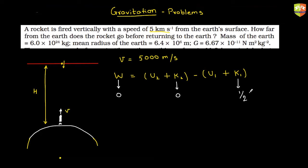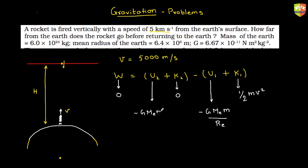K₁ is simply ½mv². U₁ is the potential energy on the earth's surface, which is −GMₑm/Rₑ, since it is at a distance Rₑ from the center. U₂ equals −GMₑm/(Rₑ + h). When writing potential energy, use the distance from the center, not the surface. The mass of the rocket cancels, so the result is independent of rocket mass. Using this expression you get the value of h.